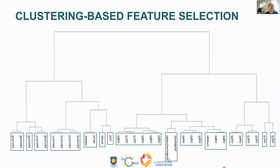Since we only have about 40 plots to work with, that's not a lot of data points. We didn't really have the chance to apply more advanced machine learning models, so we resorted to parametric regression models to develop these fuel models. However, regression models do not like correlated variables.